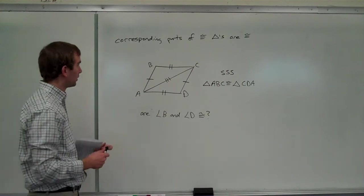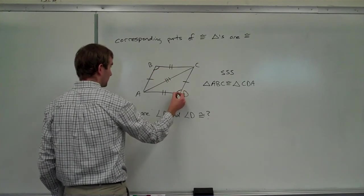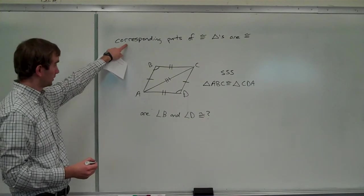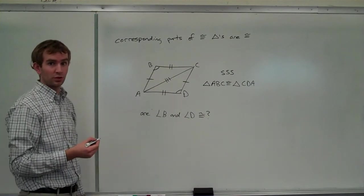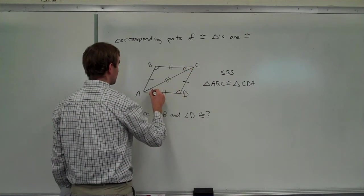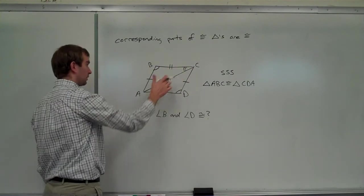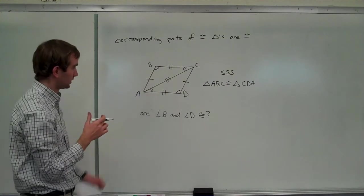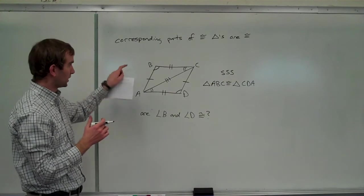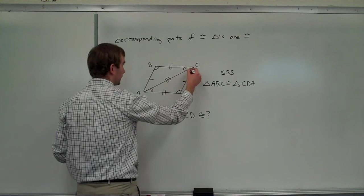So, again, we know that the corresponding sides are all congruent to each other, but now we would know that, yeah, angle B, since it corresponds with angle D, that that has to be congruent also because of this. Or that's the definition of congruence. And then we could also say that angle BCA, this angle here is congruent to this angle here. Same reason. Again, we didn't know anything about those angles starting out, but because we were able to show that these two triangles are congruent to each other, we know that all corresponding angles are too.